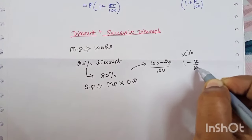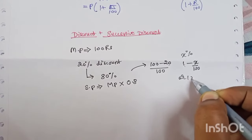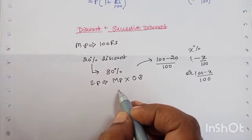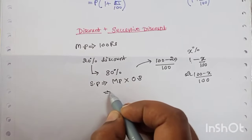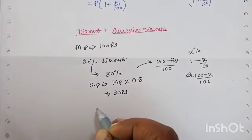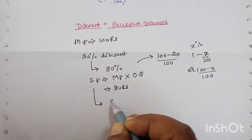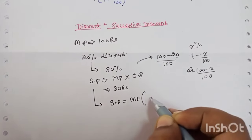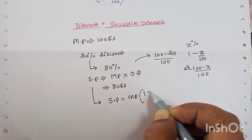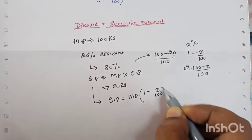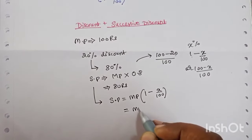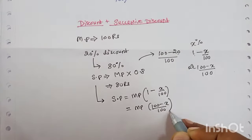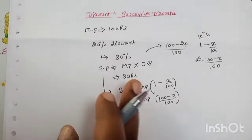You can write 100 minus x by 100. So the selling price is: you sold the product at 80 rupees. The formula is: selling price = marked price × (1 − x/100), or marked price × (100 − x)/100. This is for a single discount.